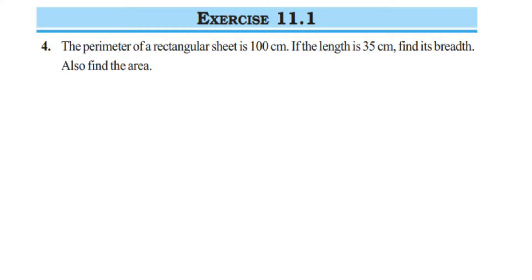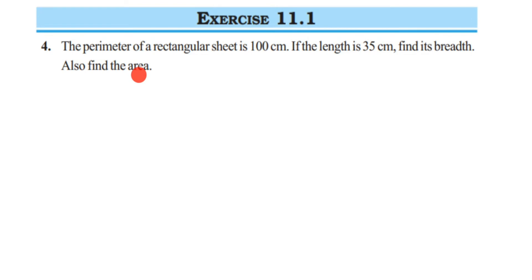Here's a question from Exercise 11.1, the perimeter and area chapter of Class 7. This is the fourth question. The perimeter of a rectangular sheet is 100 centimeters. If the length is 35 centimeters, find its breadth and also find the area. They have given us two things: the perimeter of the rectangular sheet, which is 100 centimeters, and the length, which is 35 centimeters.